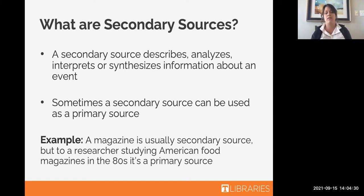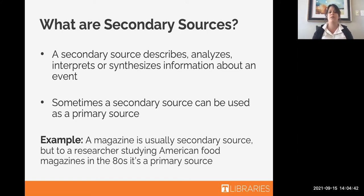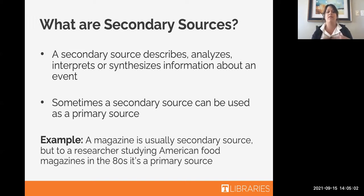To give context: a secondary source describes, analyzes, interprets, or synthesizes information about an event. How the two can be used interchangeably depends on your topic and what you're researching. For instance, a magazine is usually a secondary source, but to a researcher studying American food magazines during the 80s, it's a primary source — it's giving context to the time period, as opposed to how it's usually used as a secondary source.